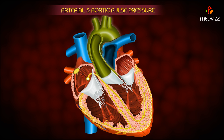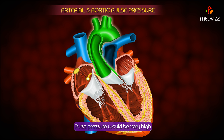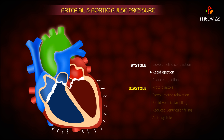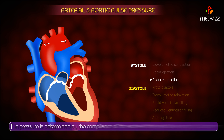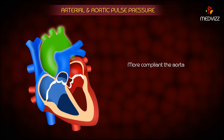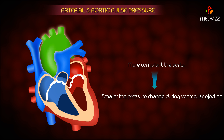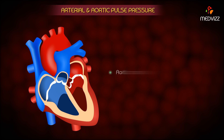If the aorta were a rigid tube, the pulse pressure would be very high. Because the aorta is compliant, as blood is ejected into the aorta, the walls expand to accommodate the increase in blood volume. As the aorta expands, the increase in pressure is determined by the compliance of the aorta at that particular range of volumes. The more compliant the aorta, the smaller the pressure change during ventricular ejection. Therefore, aortic compliance is a major determinant — along with stroke volume — of the pulse pressure.